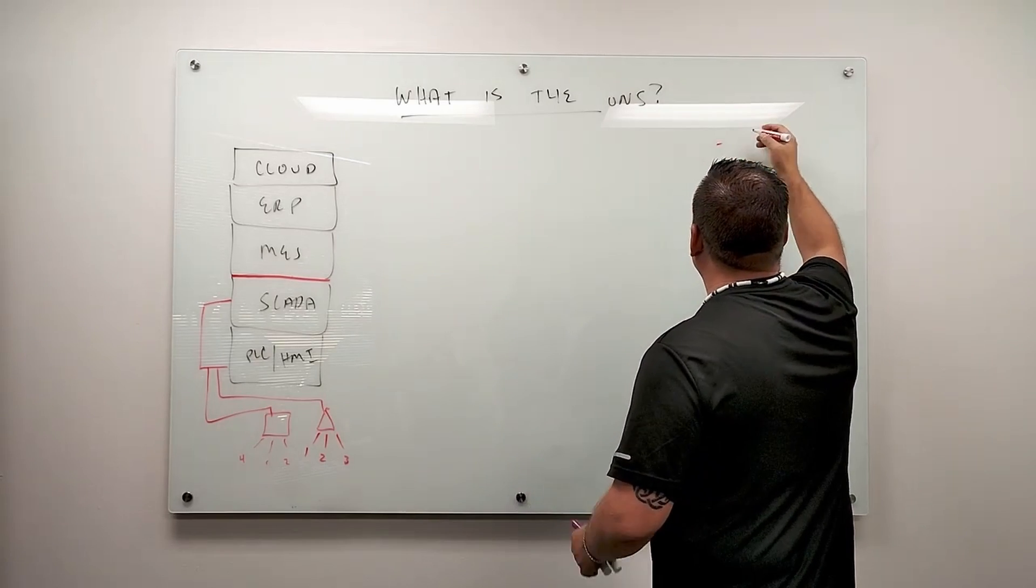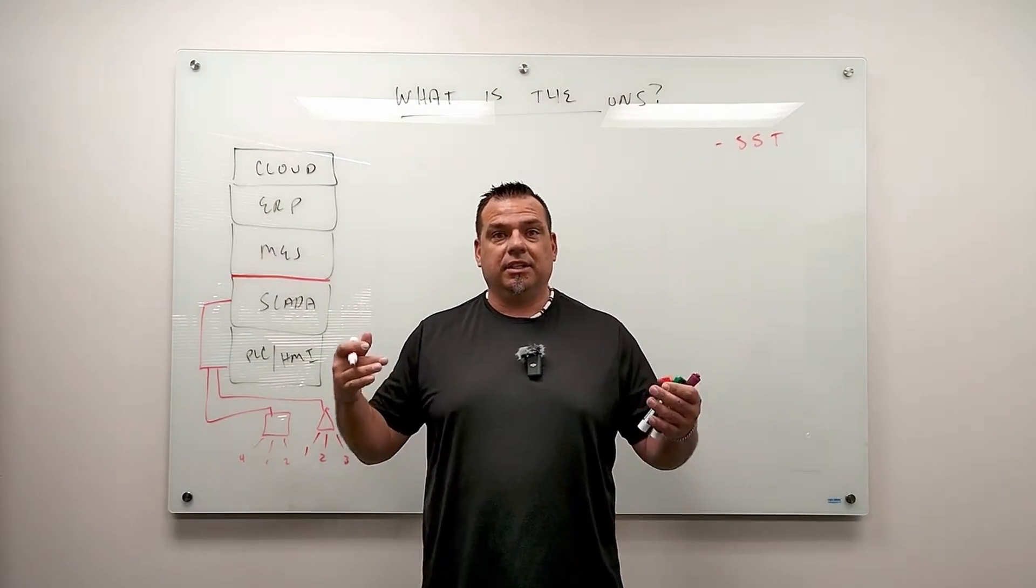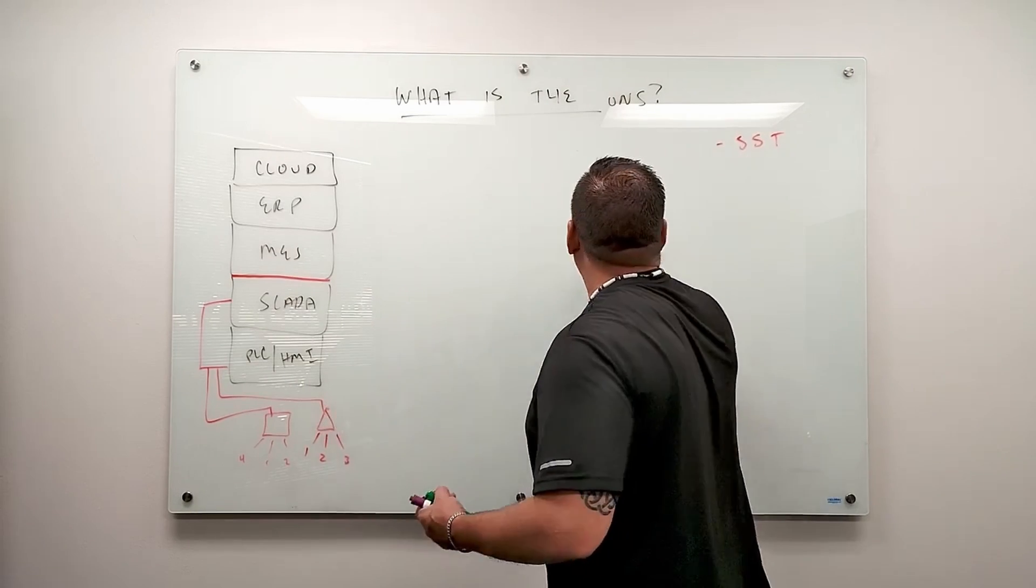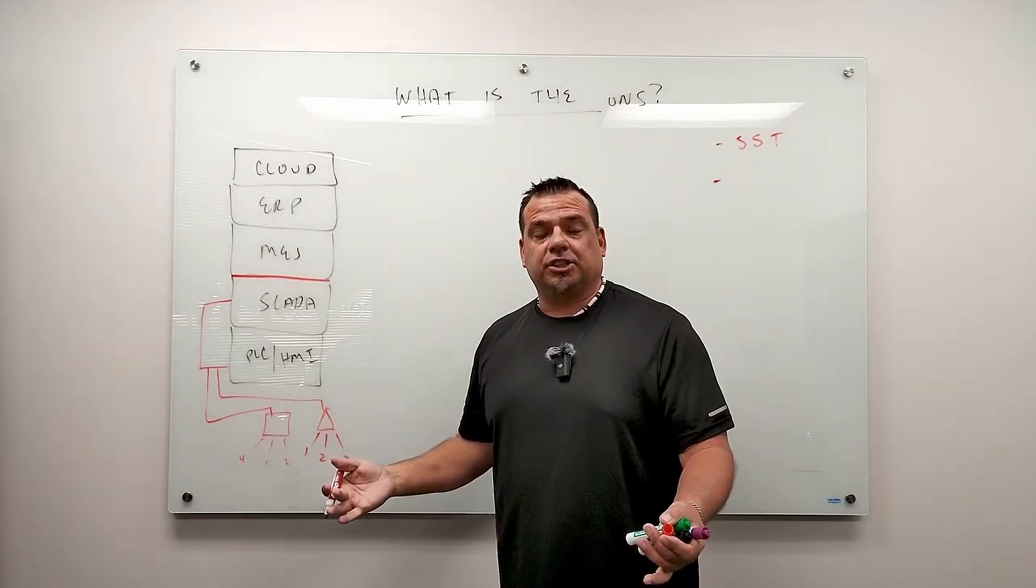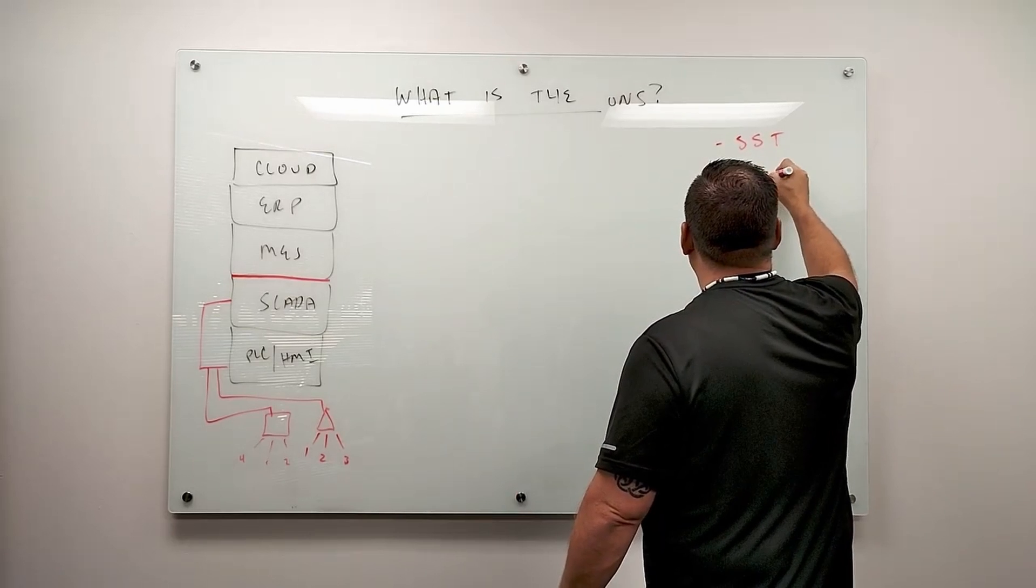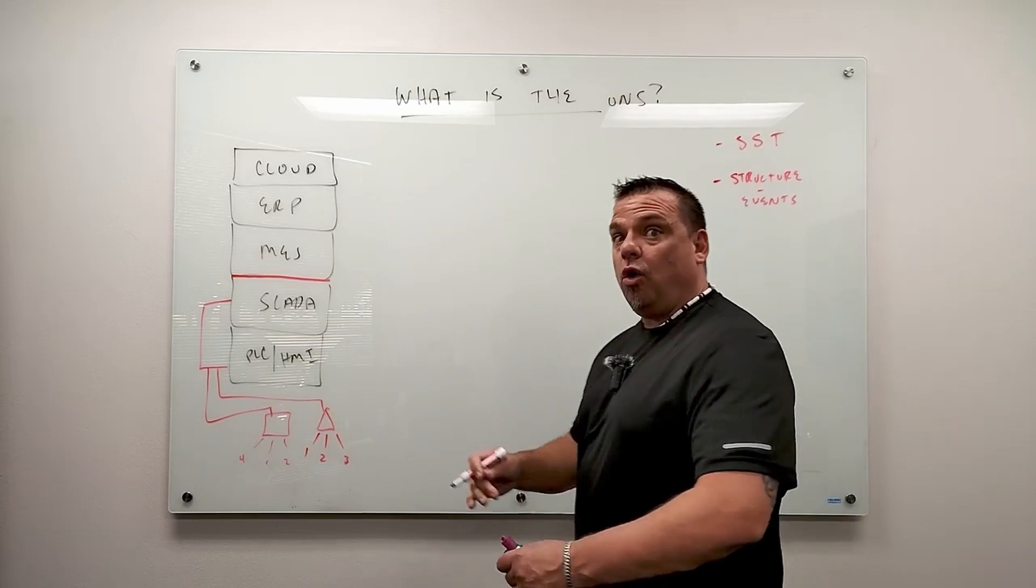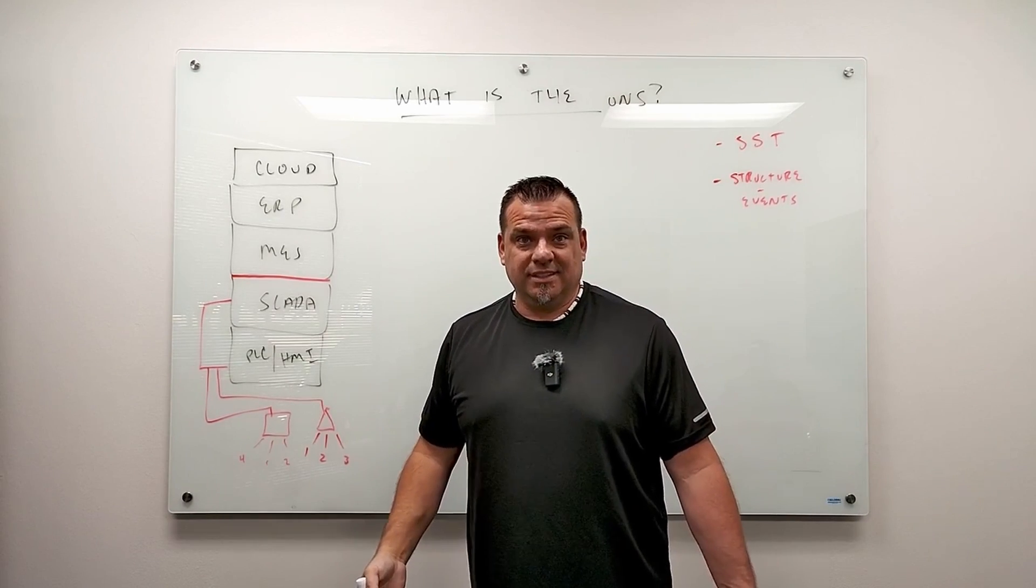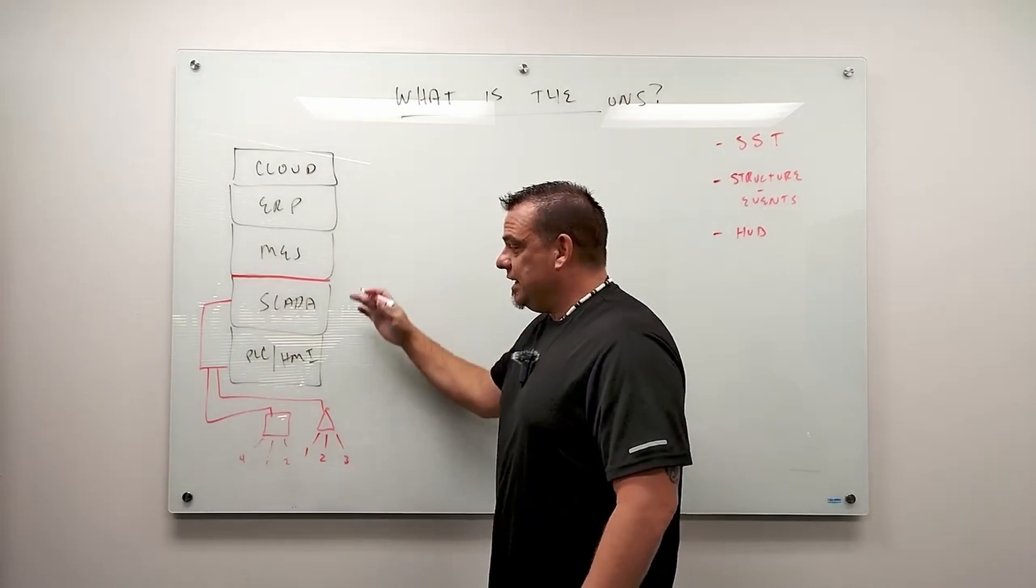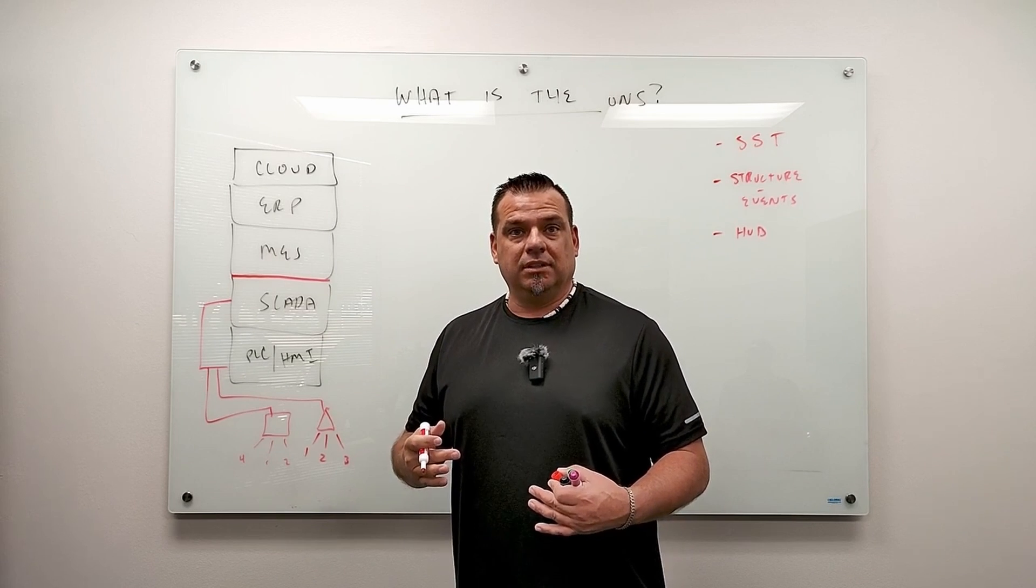So the unified namespace is a couple of things. Number one, it's the single source of truth for all data and information in your business. It's the single source of truth. Number two, for all this data, we need to structure it and we need to keep it updated. The unified namespace is the structure and the events of your business, the whole business. Number three, it is the hub where all the smart things in the business that have data connect to each other through.